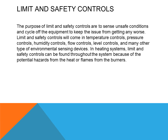The purpose of limit and safety controls is to sense unsafe conditions and cycle off the equipment to keep the issue from getting any worse. Limit and safety controls come in temperature controls, pressure controls, humidity controls, flow controls, level controls, and many other types of environmental sensing devices. In a heating system, limit and safety controls can be found throughout the system because of the potential hazards from the heat or flames from the burners.